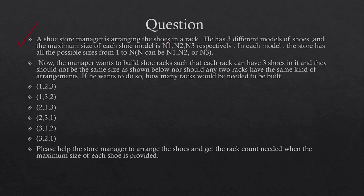A shoe store manager has three different models of shoes. The maximum size of each shoe model is n1, n2, and n3 respectively. In each model the store has all the possible sizes from 1 to n. The manager wants to build shoe racks such that each rack can have three shoes in it, and they should not be the same size, nor should any two racks have the same kind of arrangement.